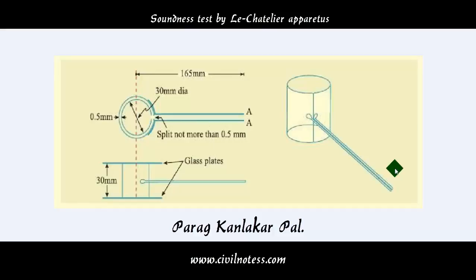Now this is one of the basic portions about this test and about soundness of cement. Now we are going for the description about this apparatus. This apparatus consists of a small split cylinder of spring brass or other suitable metal.